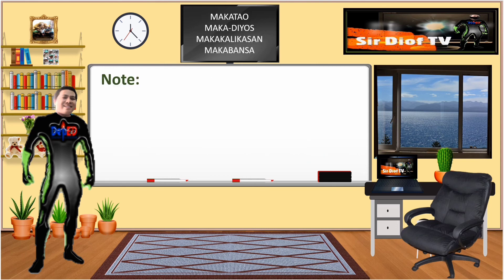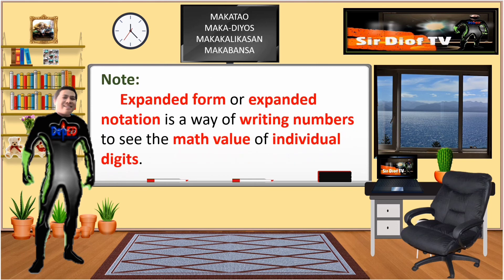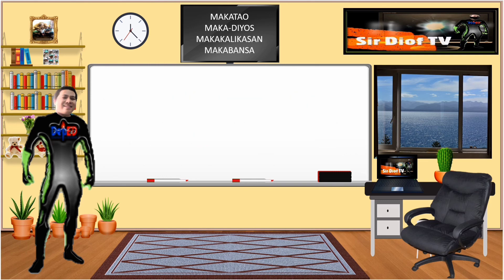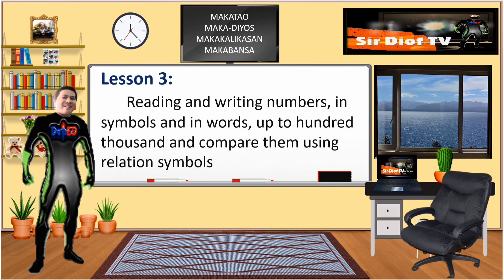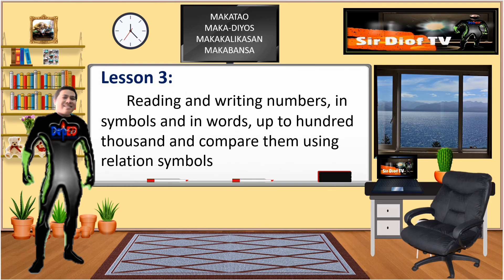Note: Expanded form or expanded notation is a way of writing numbers to see the math value of individual digits. Lesson 3: Reading and writing numbers in symbols and in words up to 100,000 and comparing them using relation symbols.